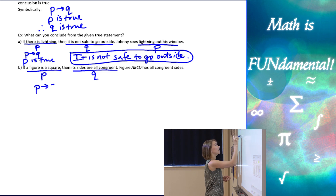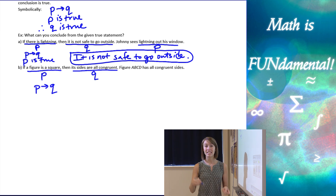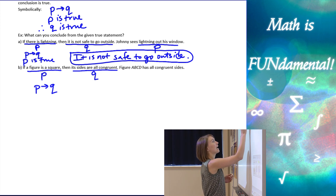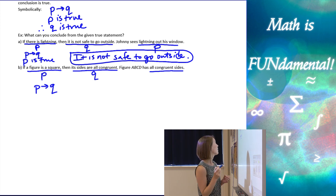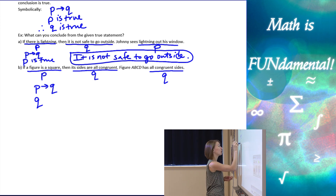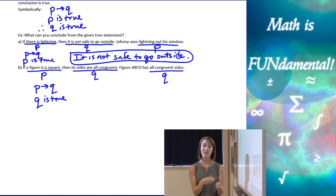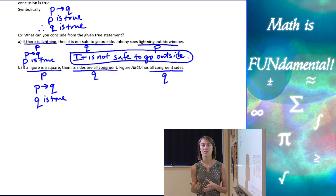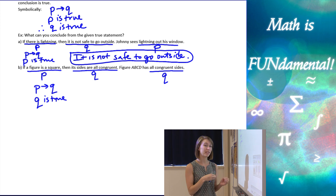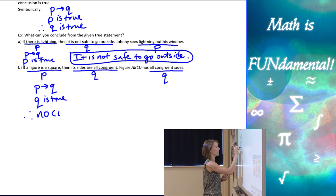So here I have P then Q, and then my additional piece of information says that it has all congruent sides. If we look, that piece of information actually matches Q — it's saying that Q is true. And even though we might really want to conclude that P has to be true, the law of detachment doesn't work that way. We can only go the direction it states: we have to be given the hypothesis and then conclude the conclusion. So here I have no conclusion — I can't conclude anything.